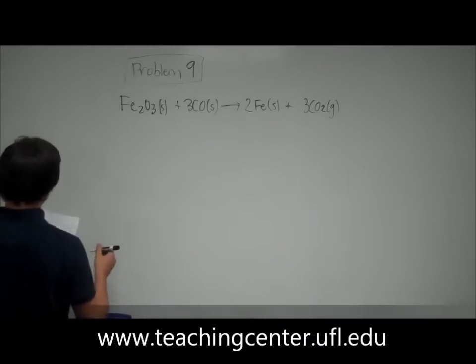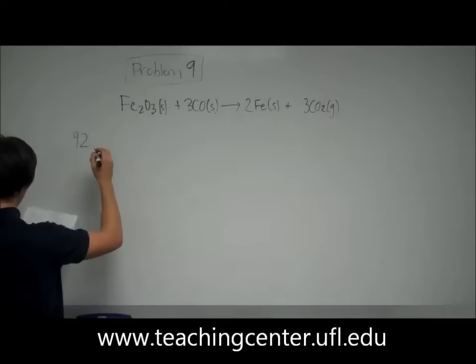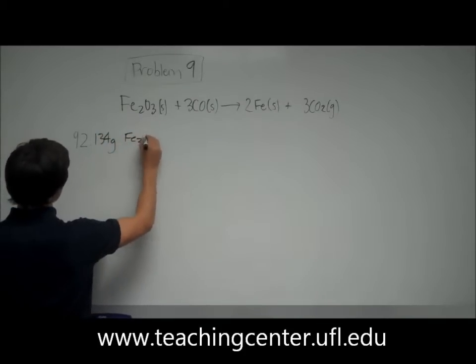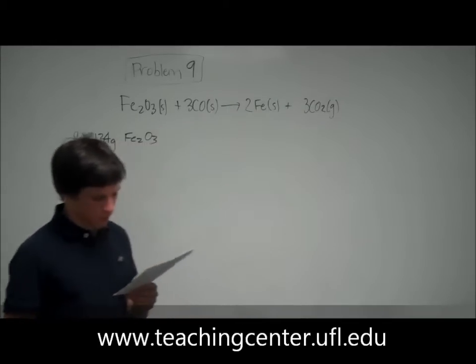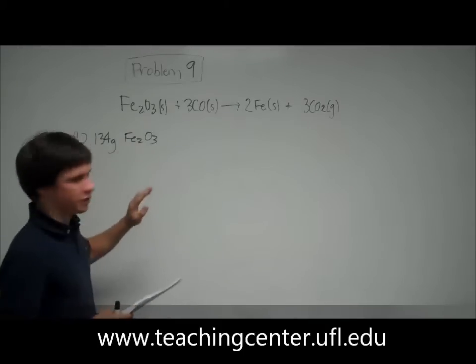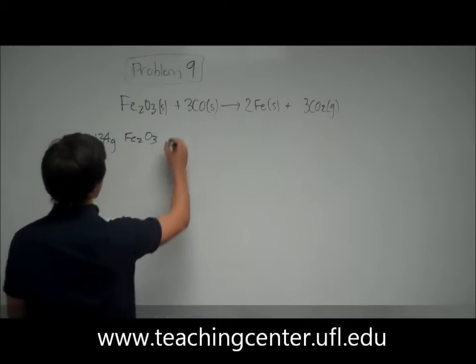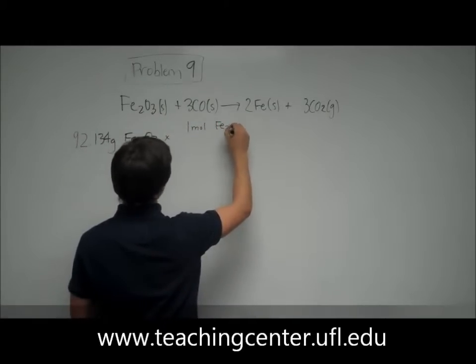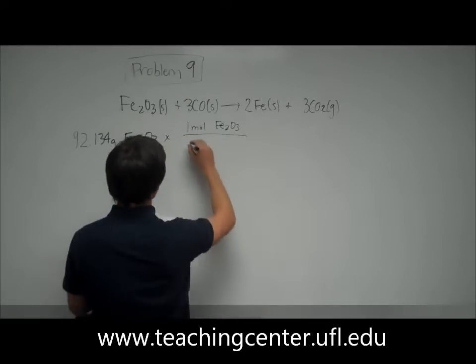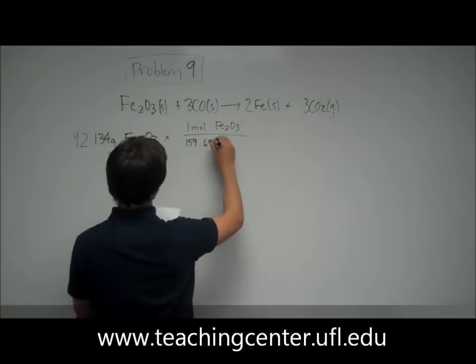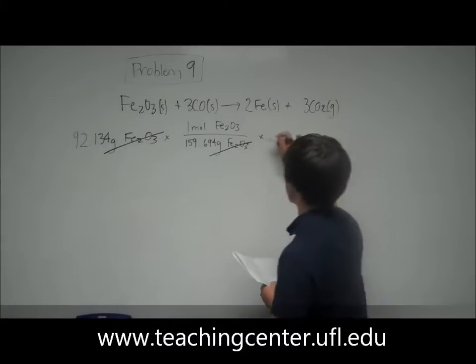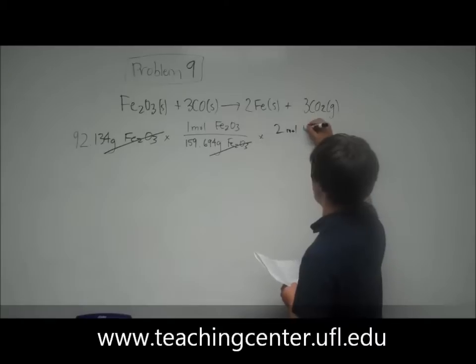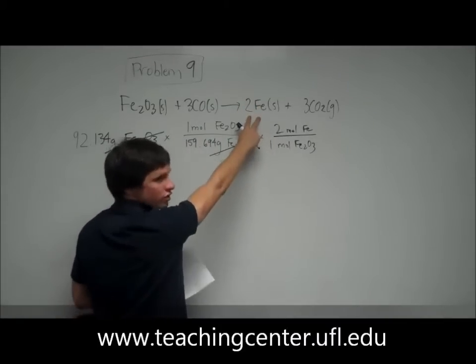So I'll show you how to do this. So they said that you have 92.134 grams of Fe2O3. So you want to see how many moles of iron this is going to make using the molar mass, which you look up iron and oxygen on the periodic table. So you're going to find that one mole of Fe2O3 weighs 159.694 grams. So that's going to cancel out the grams of Fe2O3. And then your next step is to convert this into iron. So you'll have 2 moles of iron for every 1 mole of Fe2O3. I got that from the equation. See how you get 2 moles of iron for every 1 mole of Fe2O3.